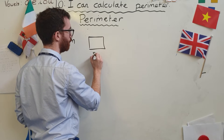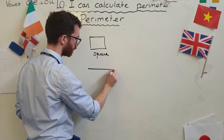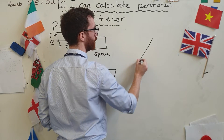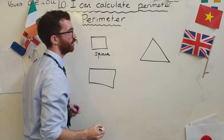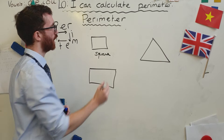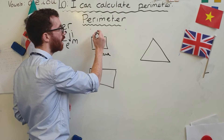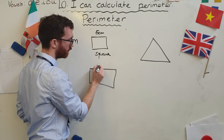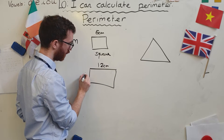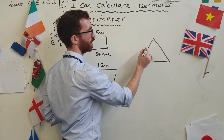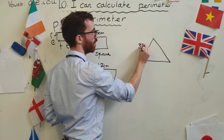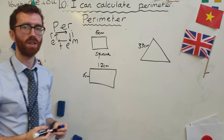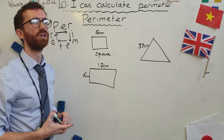I'll pop a couple on for you to have a go at. Here I have a square, an oblong rectangle, and an equilateral triangle. The square has a side length of five centimetres. The rectangle has one side of twelve centimetres and another of six centimetres. The equilateral triangle has a side length of thirty-three centimetres. Have a go at working out the perimeter of each of those shapes — pause now.